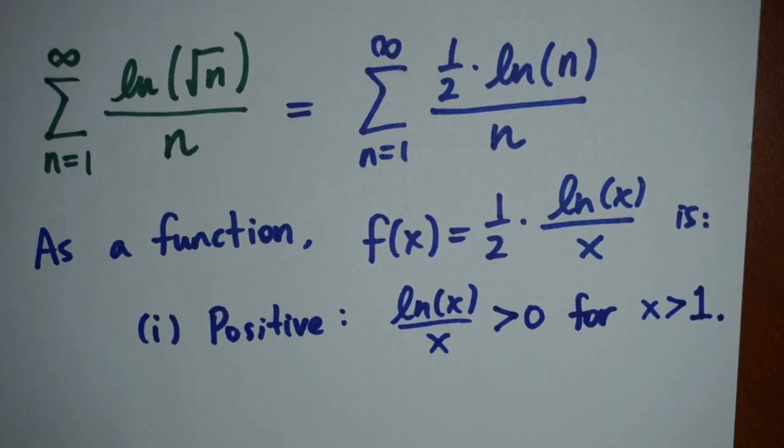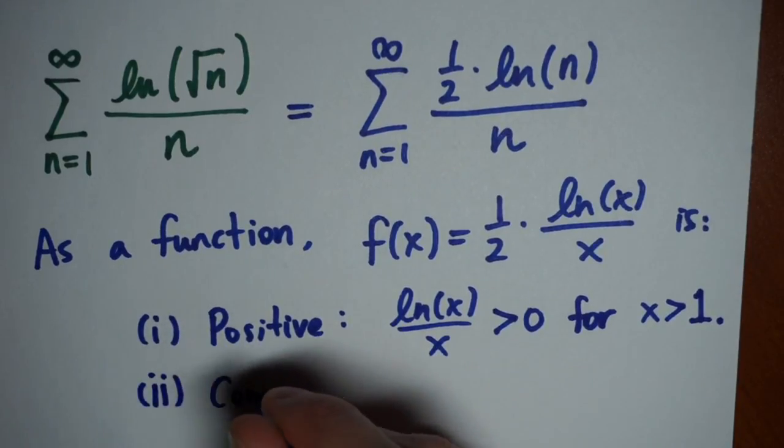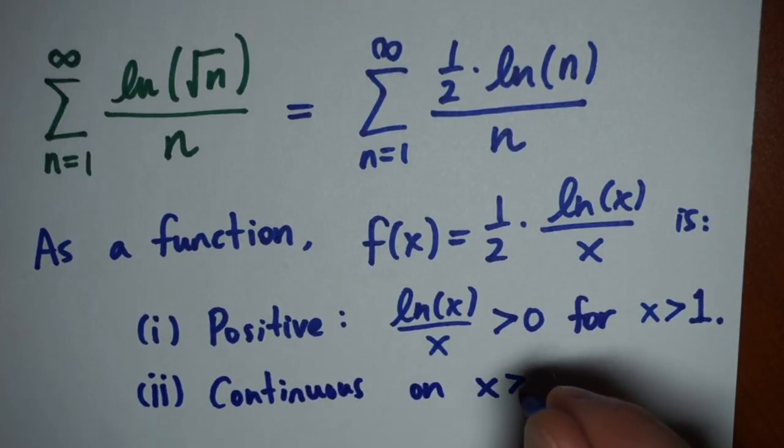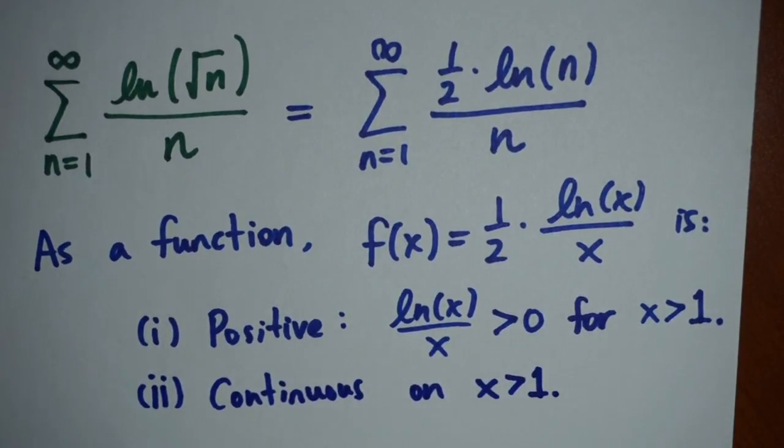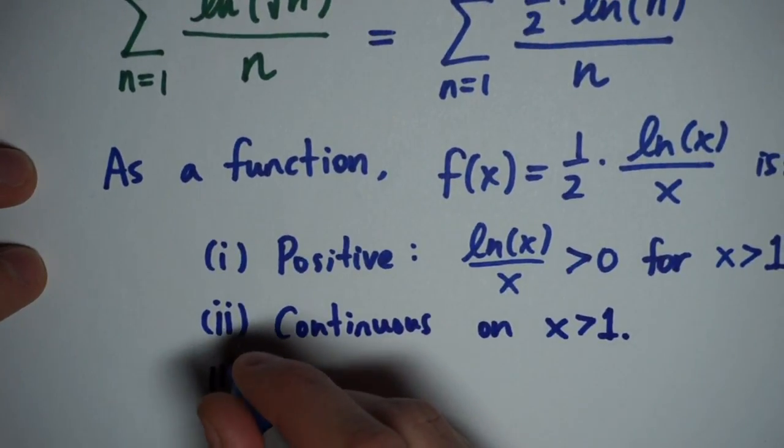The second thing it has to satisfy is that the function has to be a continuous function. And in this case, as long as we stay bigger than zero, this function is continuous, and so this is going to be perfectly fine.